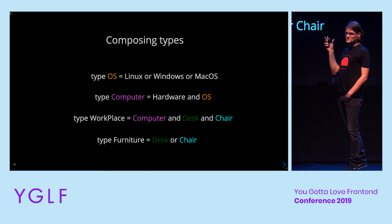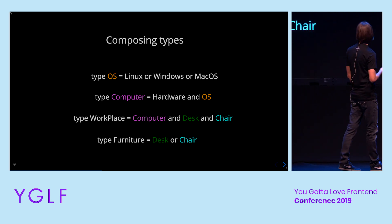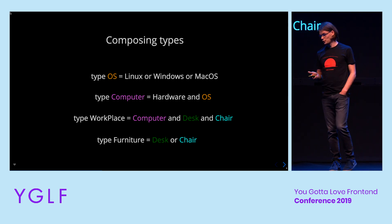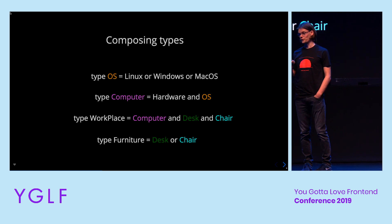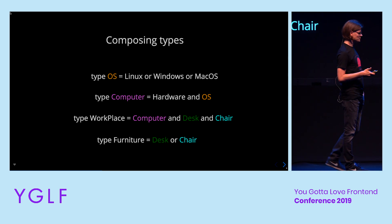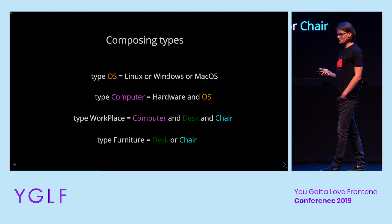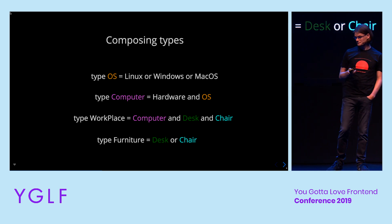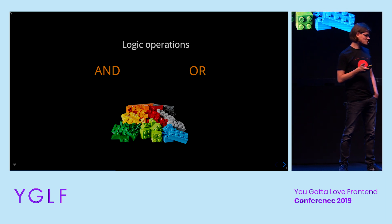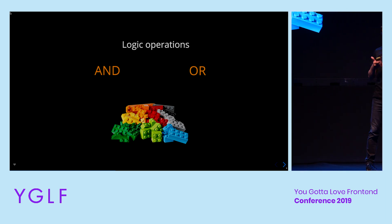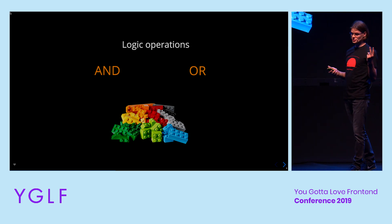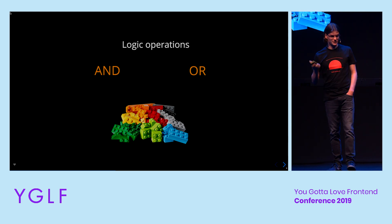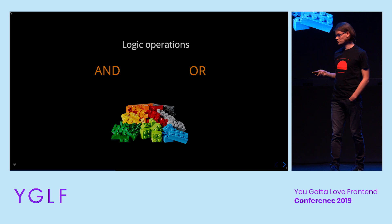For example, taking this very small subset of the world, we see that an operating system is Linux or Windows or Mac, where a computer needs both hardware and an operating system. Same goes for a workplace — it needs a computer and a chair and a desk. And I think it is wonderful that our brain can process all that information using just two logical operators: AND and OR. And talking about algebraic data types, we will look at each of these two operators.